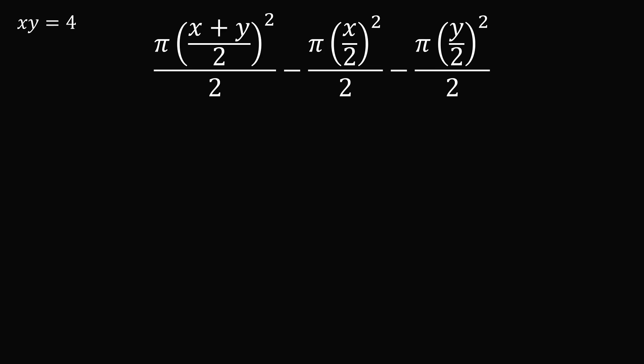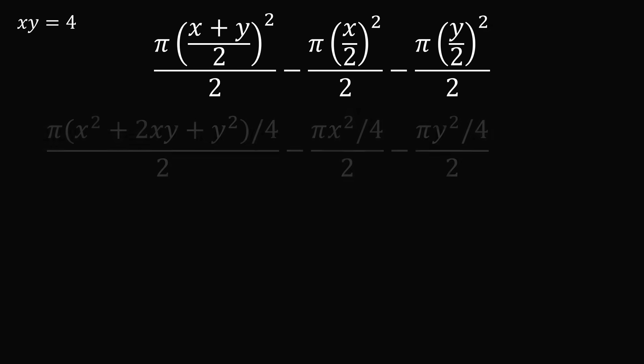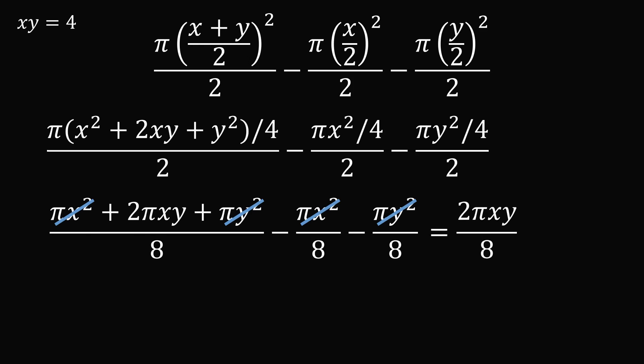The first step is we will expand each of these binomials and simplify each fraction. We now end up that all of the denominators are equal to 8, so we can just cancel across the numerators. We have pi x squared, which will cancel with minus pi x squared. We also have pi y squared, which cancels with minus pi y squared. So this entire expression will simplify to be 2 pi x y divided by 8.